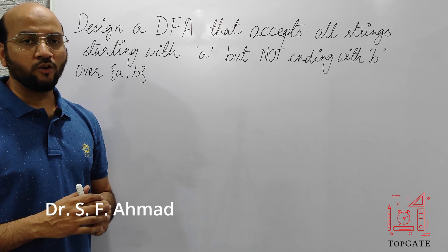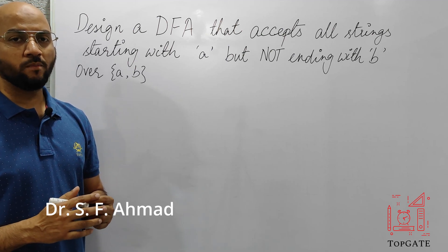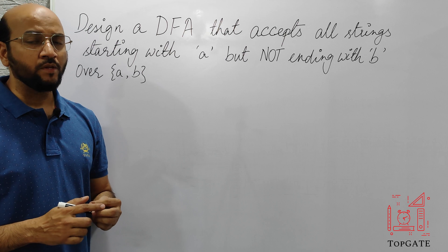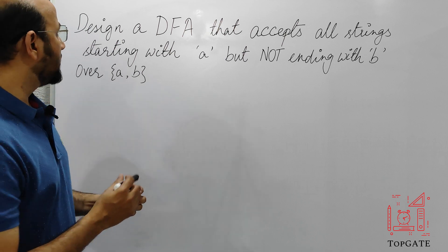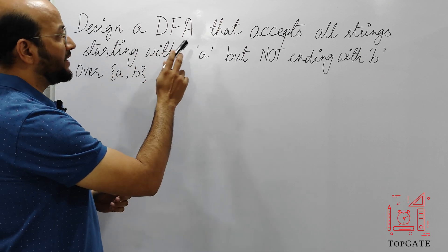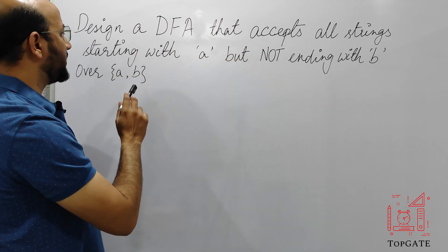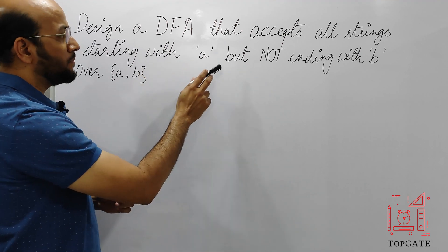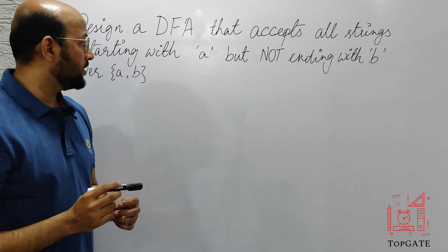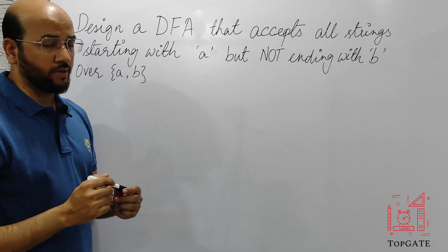Hello everyone, welcome to the channel TopGate. In this video I will discuss one more problem of designing a DFA. The problem says that we have to design a DFA that accepts all strings that start with A but not ending with B, over the alphabet A, B.